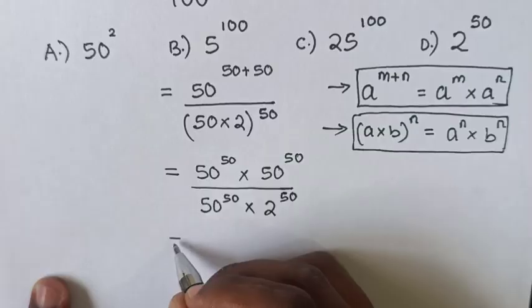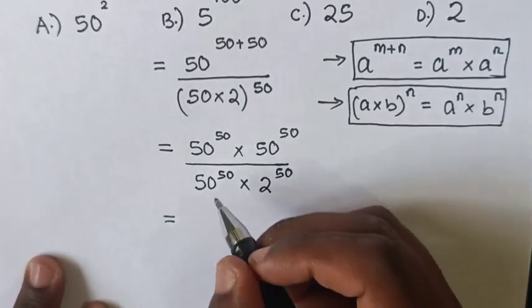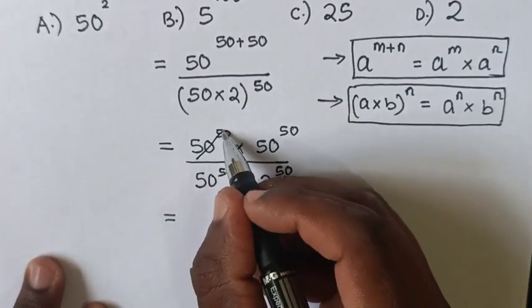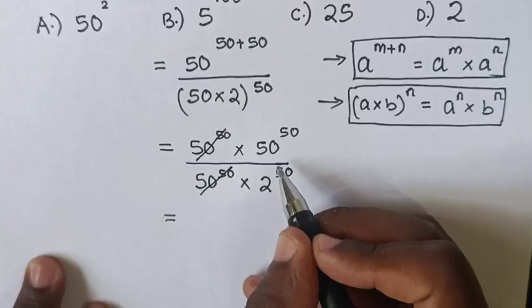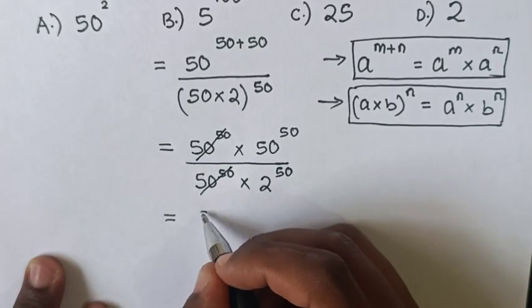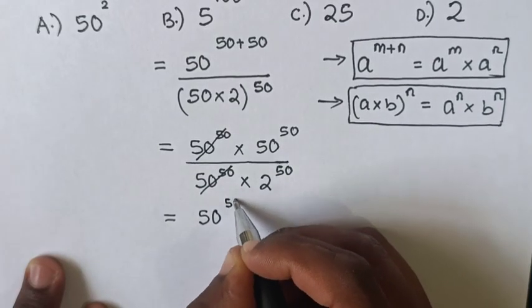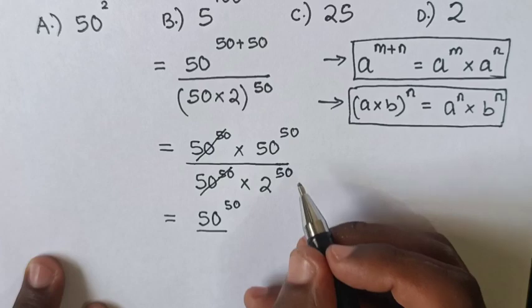This will be equal to 50^50 canceling with 50^50, leaving 50^50 over 2^50.